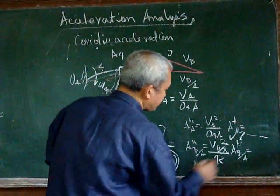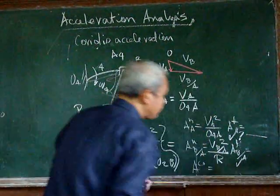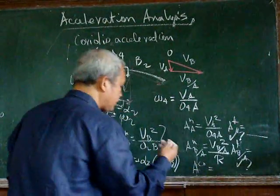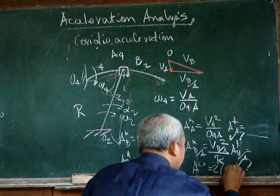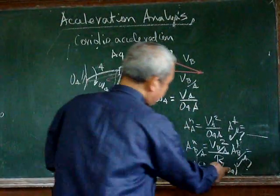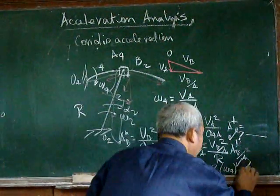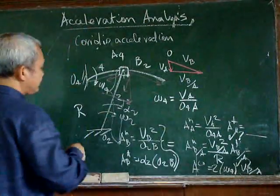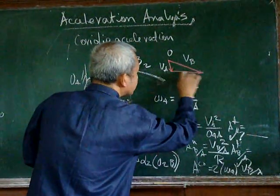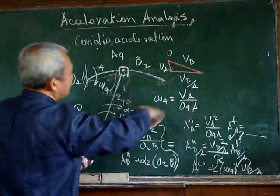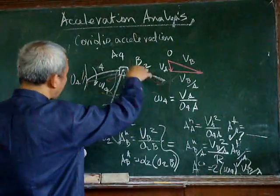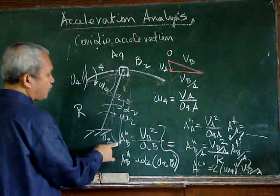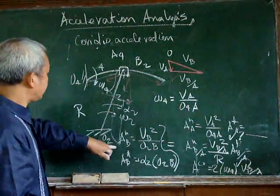The tangential acceleration of b with respect to a is also of unknown magnitude but known direction. The Coriolis component equals 2 multiplied by omega 4 multiplied by the relative velocity of b with respect to a. The direction of the Coriolis component is perpendicular to that velocity vector, rotated 90 degrees in the direction of omega 4, downward toward the axis of the center of curvature.